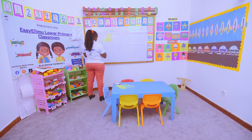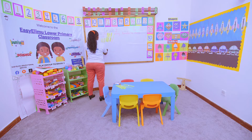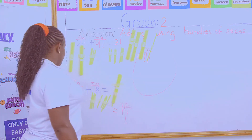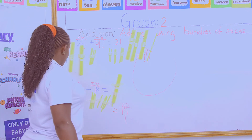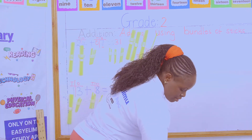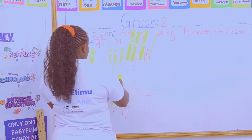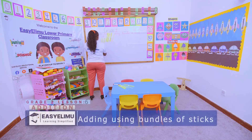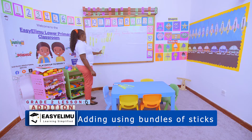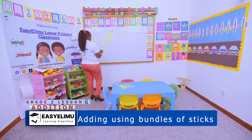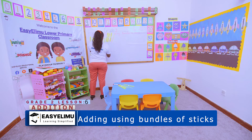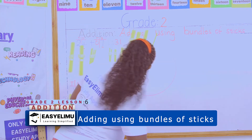I have one ten — one bundle of ten sticks. I'll put that ten there, and remember I had another ten here already from the 13. So what happens? I will get another ten on the tens side. How many tens do we have now? We have two tens. And remember we also had one one left over, so the answer is 21.